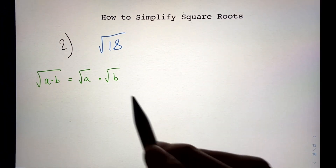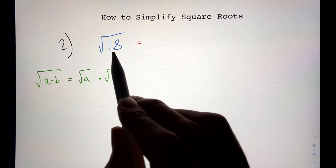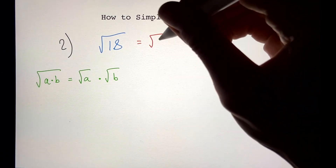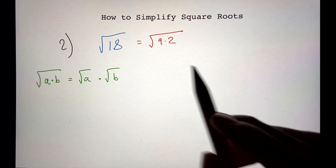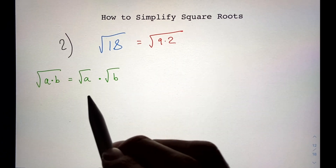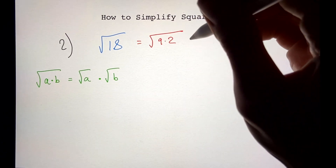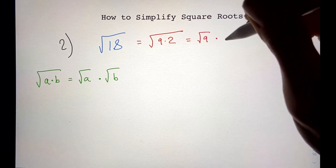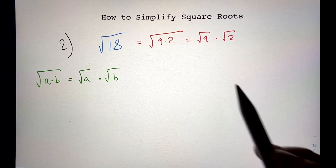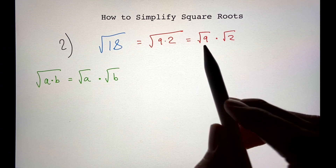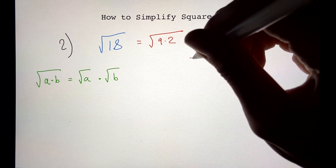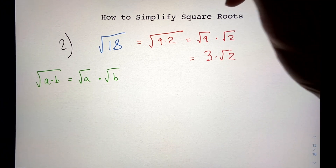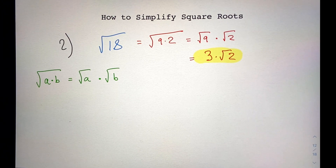When we're trying to find the square root of 18, let's think of two numbers that multiply into 18. I'm going to rewrite 18 as 9 times 2, because 9 times 2 is just 18. Using that rule, we can simplify by separating: the square root of 9 is just 3, so we get 3 times the square root of 2. This is our answer — we cannot simplify it anymore.